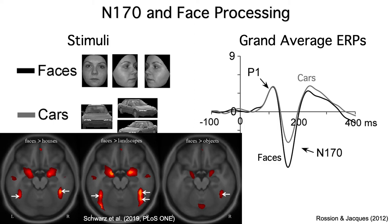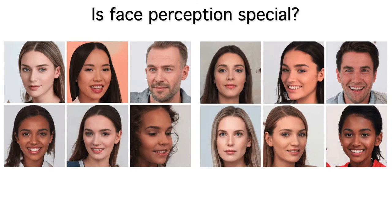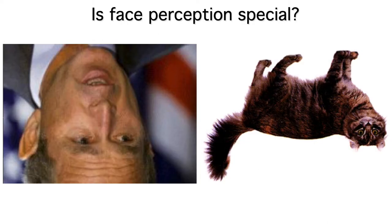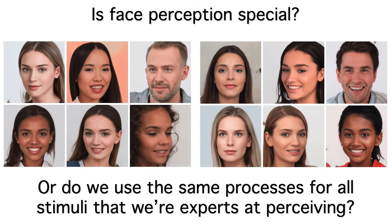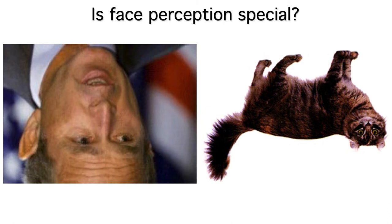This research has led to a fundamental theoretical question: is face perception special? That is, do we have domain-specific neural systems that are solely used for face perception? That might explain why inverting an image has a larger impact on the perceptibility of faces than on other sorts of objects. But maybe these effects are a consequence of the fact that virtually all humans have a lifetime of experience in perceiving faces. In other words, are there special-purpose processes for faces, or do we use the same processes for all stimuli that we're experts at perceiving?